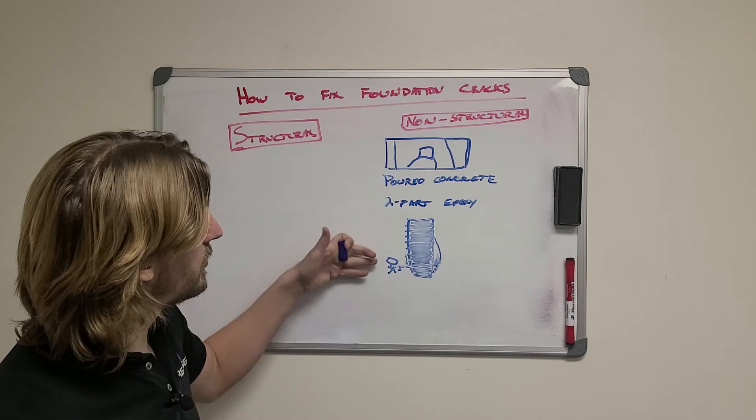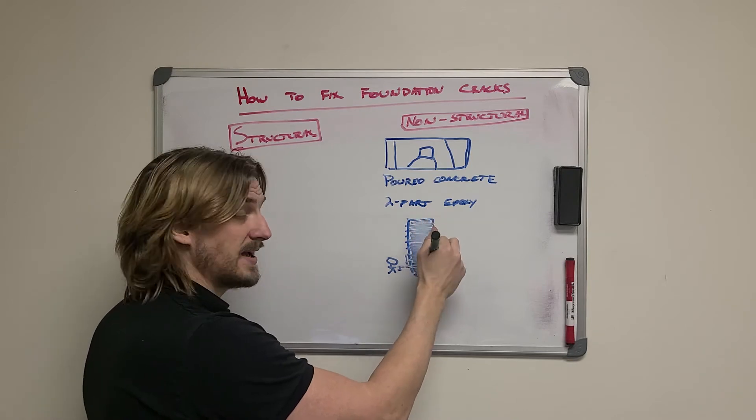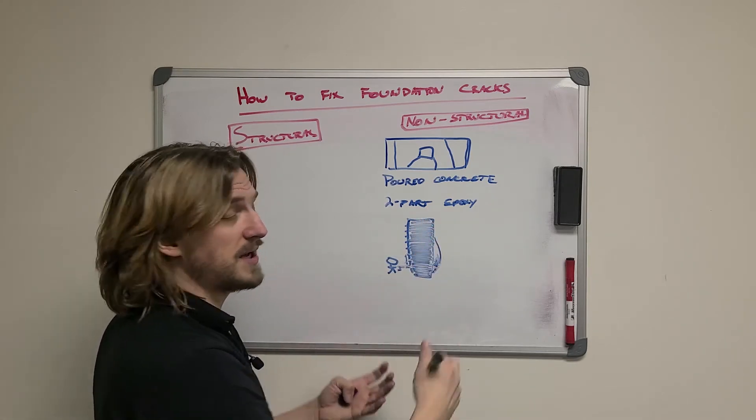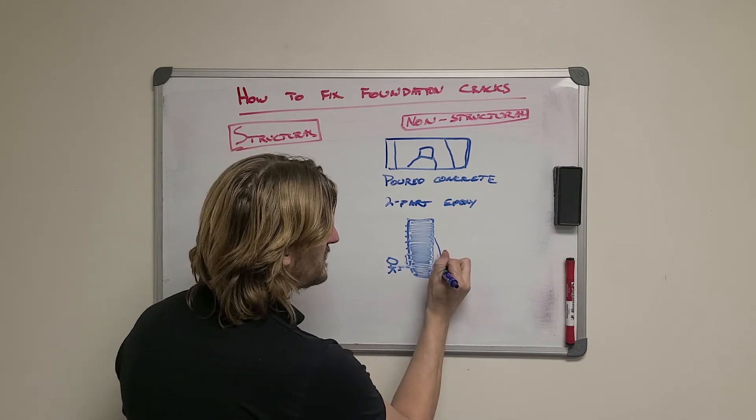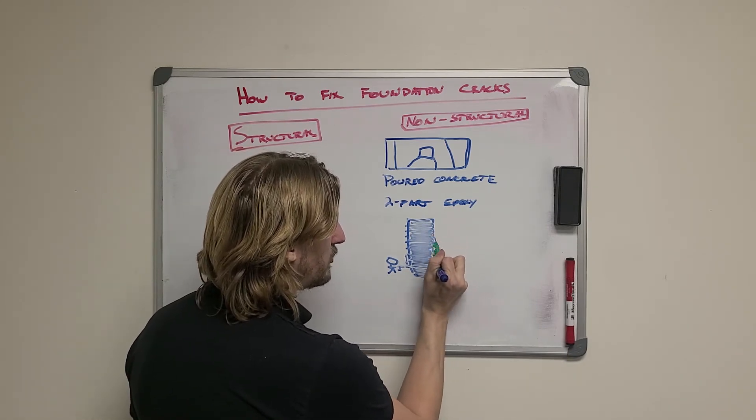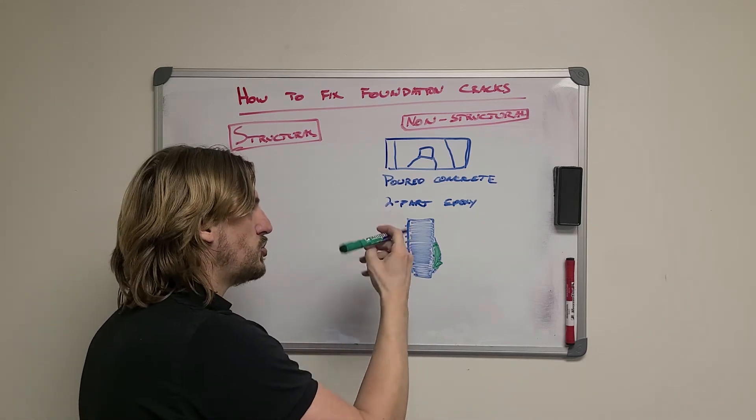When our technicians are going through using our two-part non-expanding epoxy and they find one of these pockets, they'll switch to an expanding polyurethane which will go in here and it'll expand and fill the entire void creating a good backing for us to switch back to the two-part epoxy.